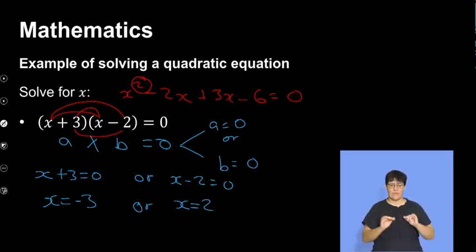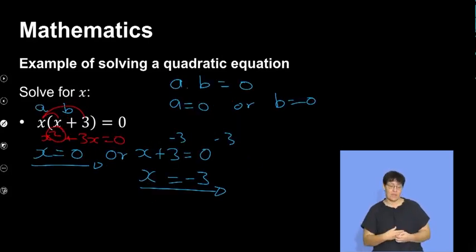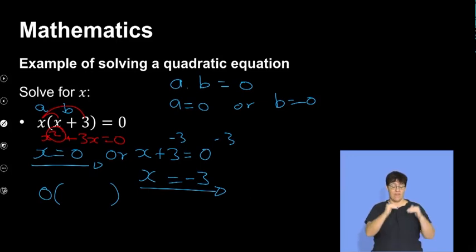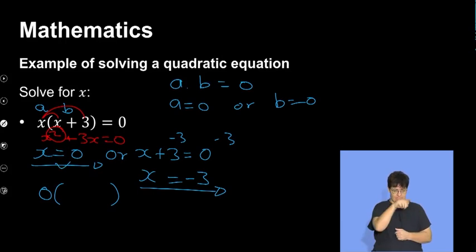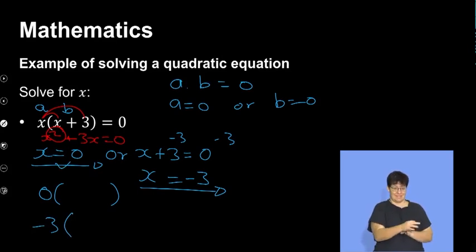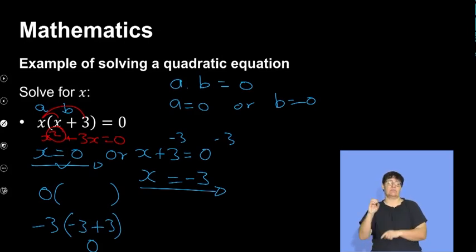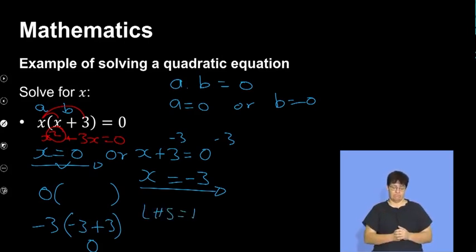Now remember my last point — check your answers. Let's go back to the previous example. If I check the first answer which is zero, as soon as I have zero and a multiply by something, it automatically makes it zero, so that solution is correct. Let's test negative 3: it will be negative 3, inside the bracket negative 3 plus 3 is 0, multiplied by negative 3 equals 0. The left-hand side is always equal to the right-hand side for it to be correct.